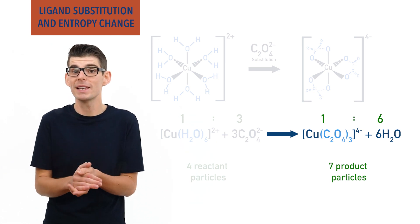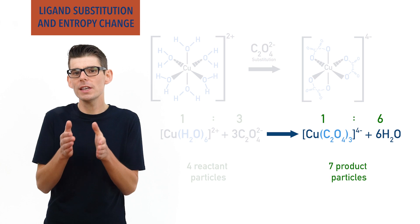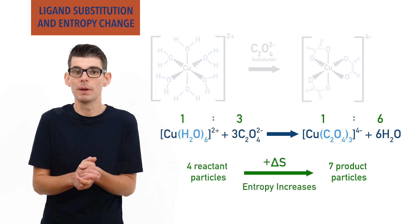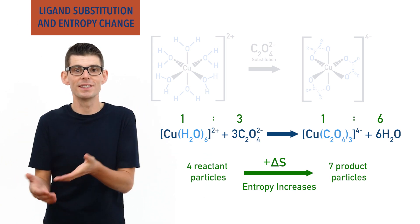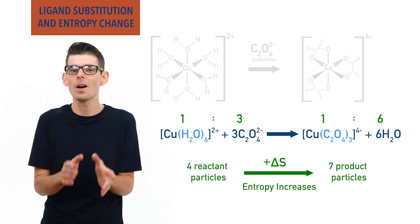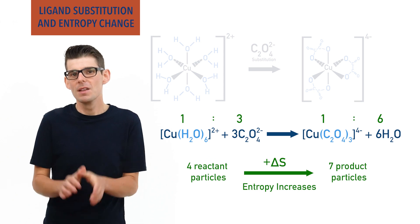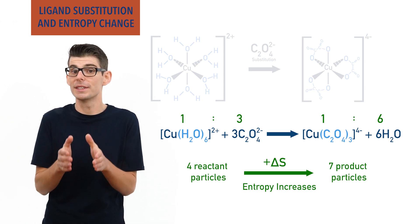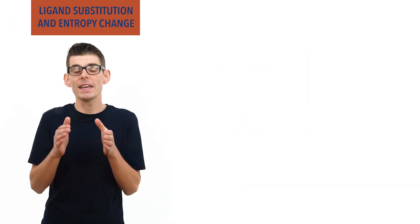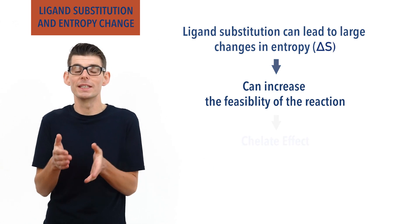The ligands in it are fixed in place and can't move independently. A change from four to seven particles means an increase in entropy for the system, as the potential disorder increases when there are more particles present. If unsure about why, check the video on entropy — link in the description below.